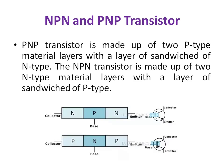The second difference is the layer structure. In an NPN transistor, there are two N layers with a P layer in between. But in a PNP transistor, there are two P layers with an N layer in between.